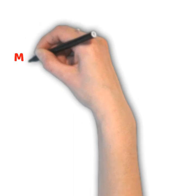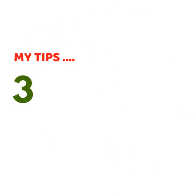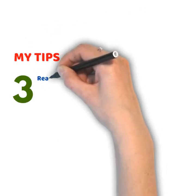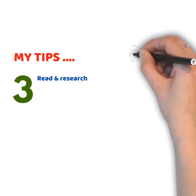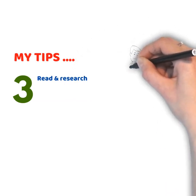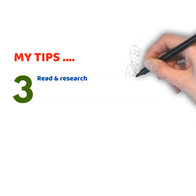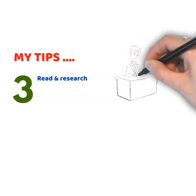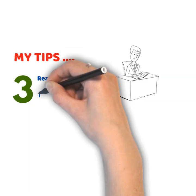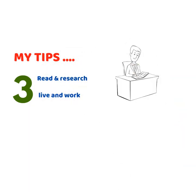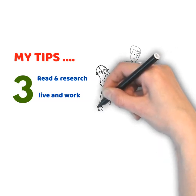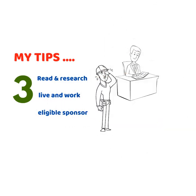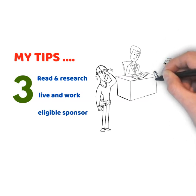Tip number three: if you are applying for a Subclass 491 state sponsorship and you are offshore, read and research about your state — the economic conditions, public services, jobs, schools, and hospitals. Devote some time to know the positives and negatives about the place. If you are onshore, you've got to be living in the state that you want to approach for nomination. And if you are sponsored by your relative, ensure that you have their permission and that they are eligible to sponsor.